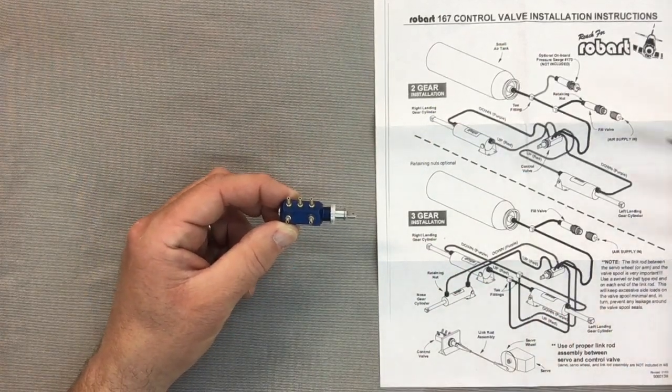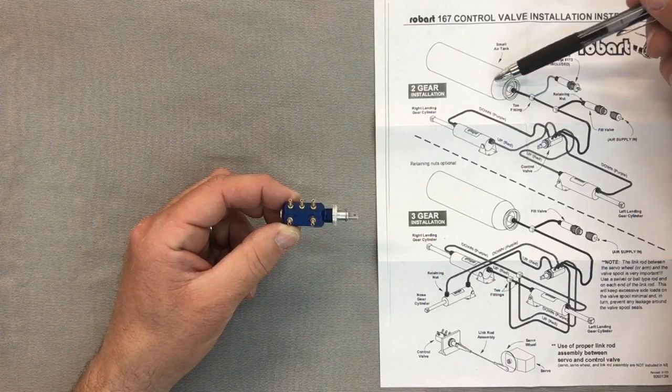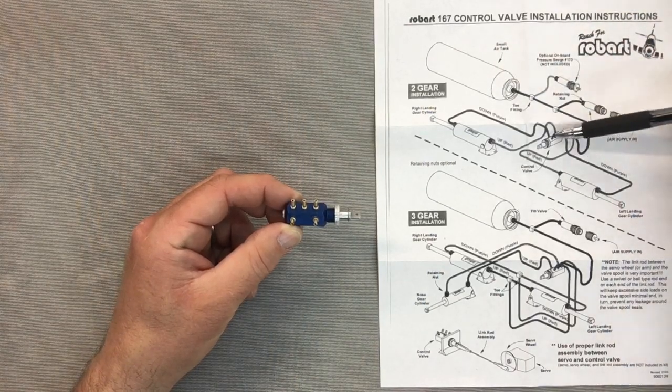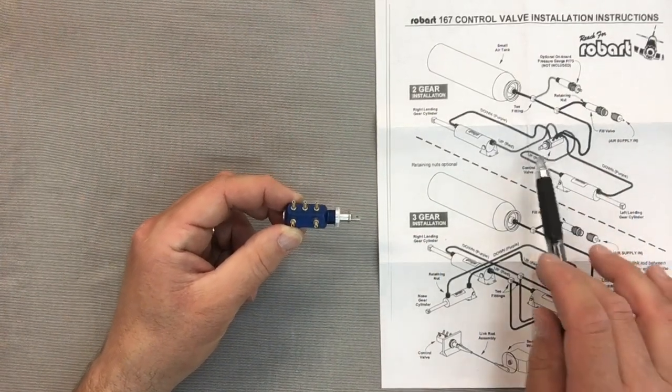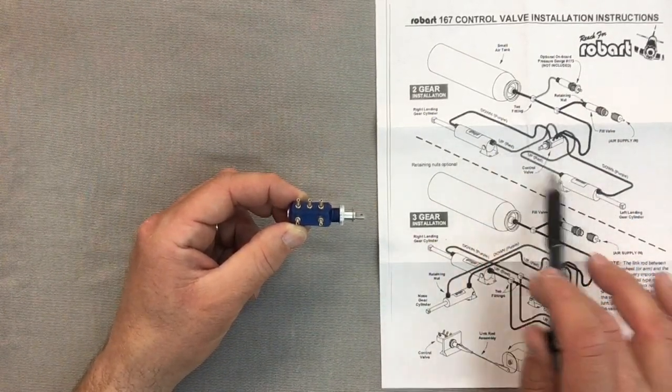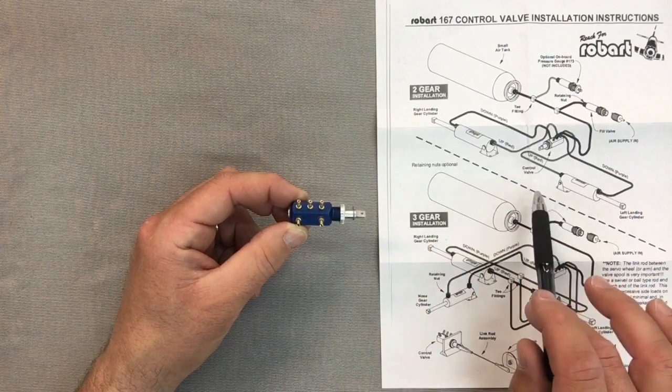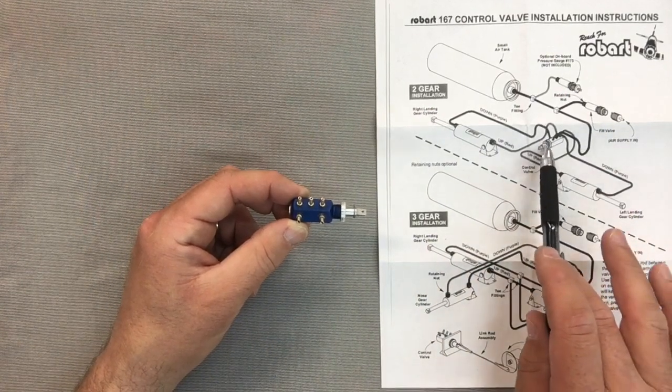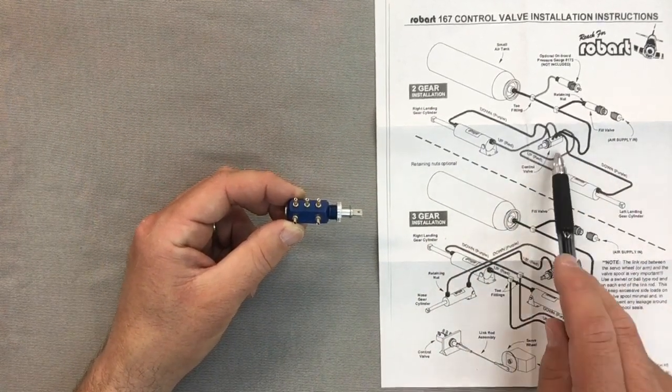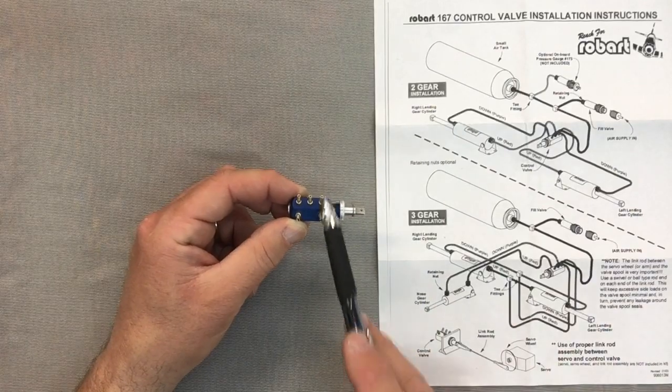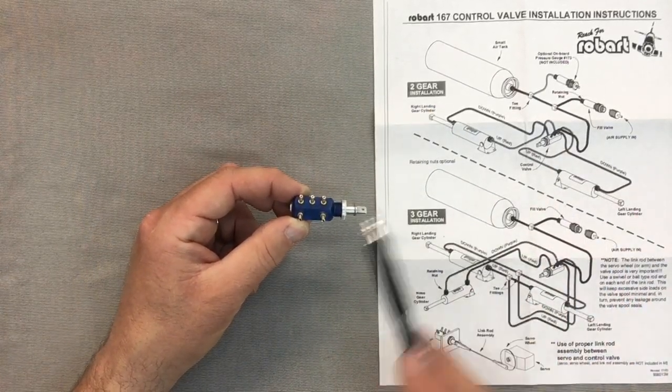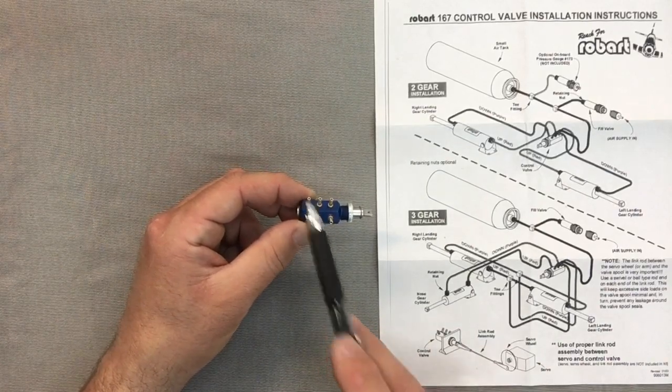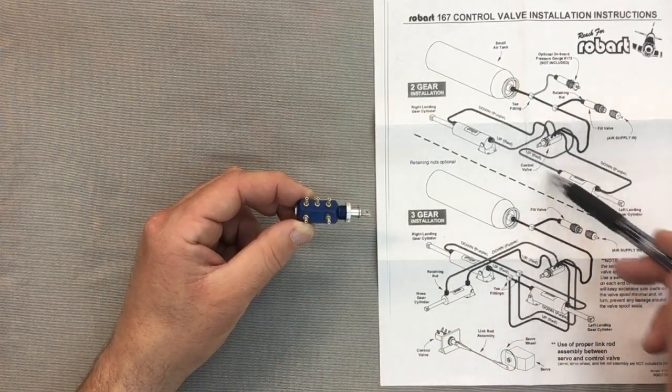To look at the diagram, you would have your air tank here. The air comes into the middle nipple, and if we're just doing a two gear installation, the air down would be here. These two nipples would go to your air down, and these two nipples on the other side here would be your air up.